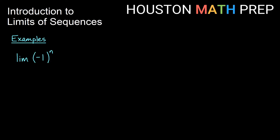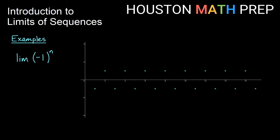Here we have another case that looks like an exponential. When I plug in an odd number for n I get negative 1; if I plug in an even number I get positive 1. So the terms don't grow and don't shrink — they just keep bouncing back and forth between negative 1 and 1. The sign changes but the absolute value stays 1. It doesn't settle at 1 because we're always jumping to negative 1, and it doesn't settle at negative 1 either. So this sequence diverges — not because it grows infinitely, but because it never settles at one specific real number.